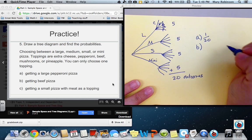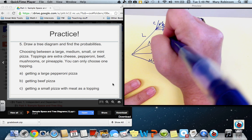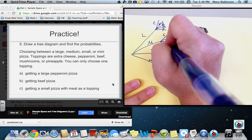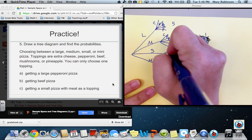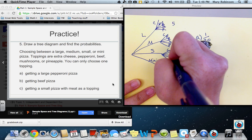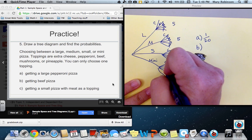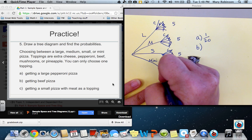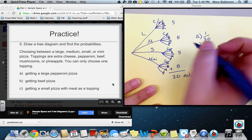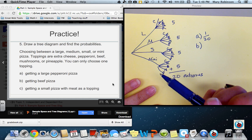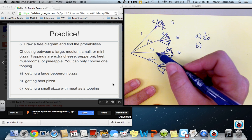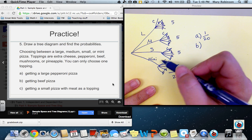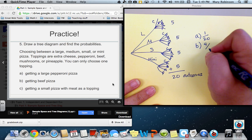For part B, it asks the probability of getting beef pizza. Well, remember, there are several of those. You can actually get beef on a large, beef on a medium, beef on a small, or beef on a mini. So, therefore, there are four possible options for getting beef.